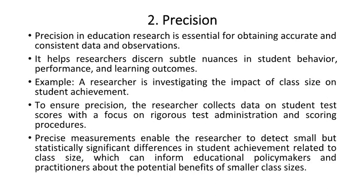The second characteristic is precision. Precision in education research is essential for obtaining accurate and consistent data and observations. It helps researchers discern subtle nuances in student behavior, performance, and learning outcomes.